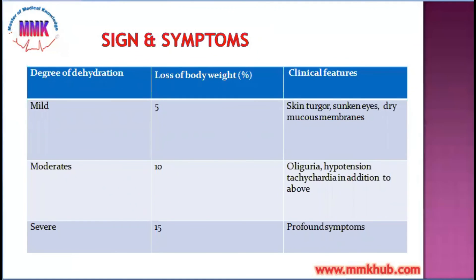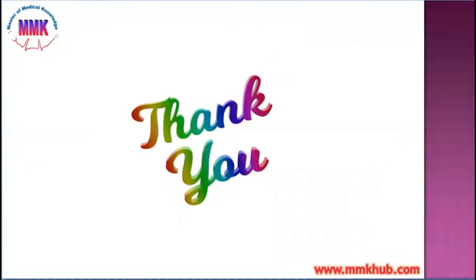In mild conditions, the clinical features include loss of skin turgor, sunken eyes, and dry mucous membranes. In moderate conditions, systemic symptoms appear, such as decreased urine formation called oliguria, decreased blood pressure called hypotension, and compensatory increase in heart rate. In severe conditions, all these clinical features are exaggerated and there are profound symptoms — the patient may go into shock. Thank you very much for today; we will meet again in the next topic.